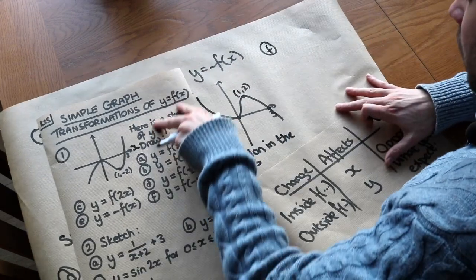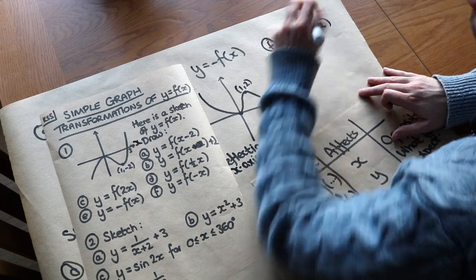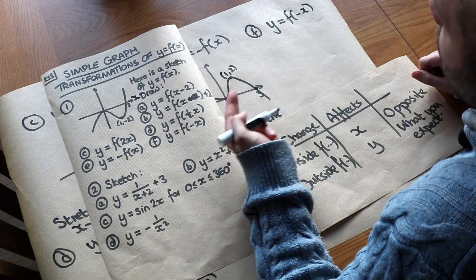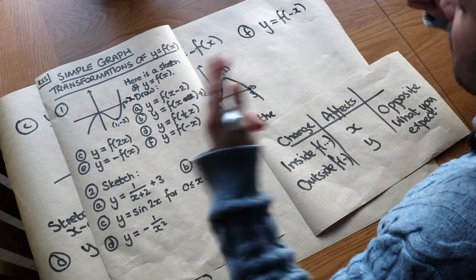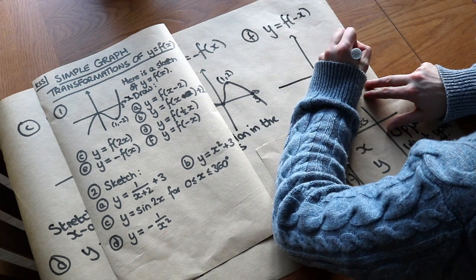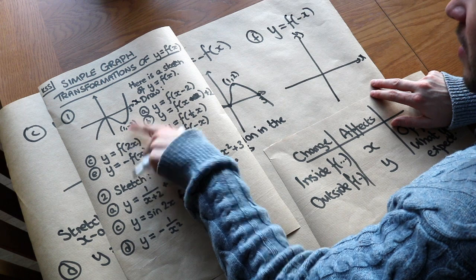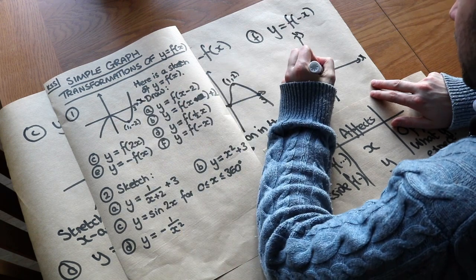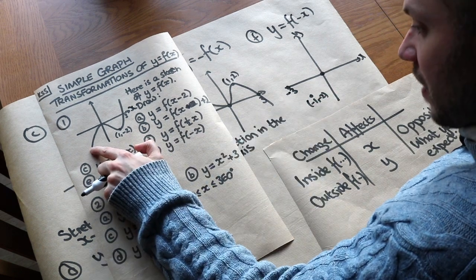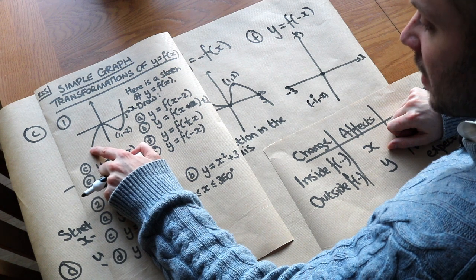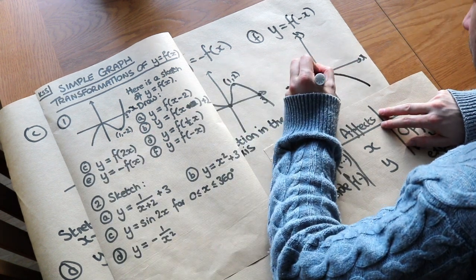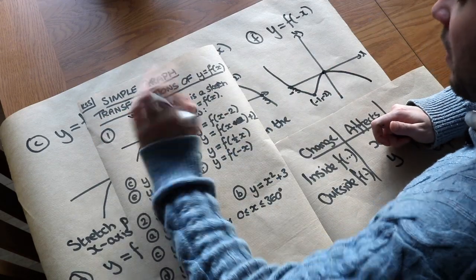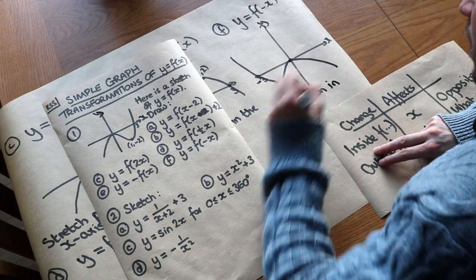Finally for part f, y equals f of minus x. That change is inside the function, so it affects the x values and does the opposite — but the opposite of negating is still negating, since dividing by minus 1 is the same as multiplying by minus 1. So we negate the x values: (1, −2) becomes (−1, −2), the x-intercept at 3 becomes −3, and (0, 0) stays the same. The graph has been reflected in the y-axis — it's been flipped over — so that's a reflection in the y-axis.